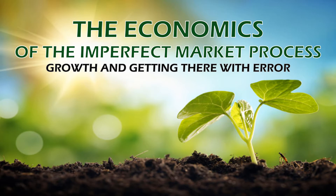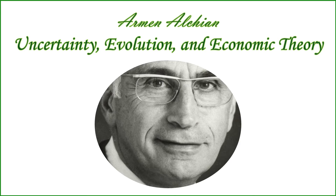What we're really going to do in this lecture series is break down a famous article by Armin Alchian. The paper is his 1950 paper from the Journal of Political Economy called 'Uncertainty, Evolution, and Economic Theory.' Each mini lecture will break down one section from this paper, and together we get a sense of how Alchian talks about the economics of the imperfect market process and how we have growth and success even with limited cognitive abilities or error within the market system.